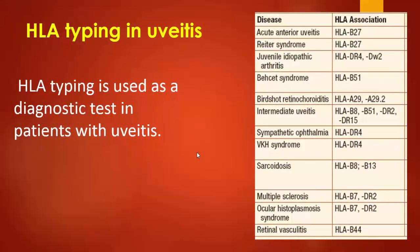HLA typing is used as a diagnostic test in patients with uveitis. This table summarizes different HLA antigens and different diseases causing anterior uveitis. For example, in Behçet's syndrome, the HLA antigen is HLA-B51. In Vogt-Koyanagi-Harada syndrome, the HLA antigen is HLA-DR5. In sarcoidosis, HLA-B8 and B13. And in cases of retinal vasculitis, HLA-B44.